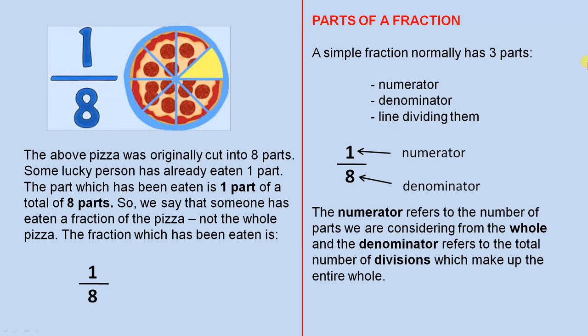The above pizza was originally cut into eight parts. Some lucky person has already eaten one part. The part which has been eaten is one part of a total of eight parts. So we say that someone has eaten a fraction of the pizza, not the whole pizza. The fraction which has been eaten is one over eight. A simple fraction normally has three parts.